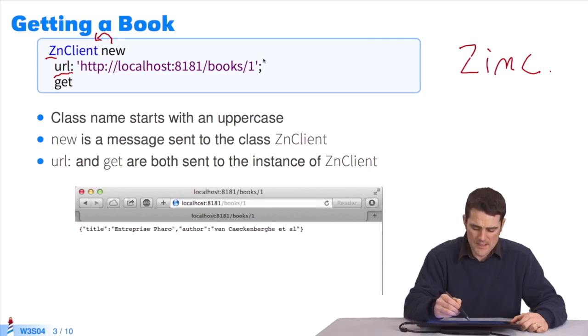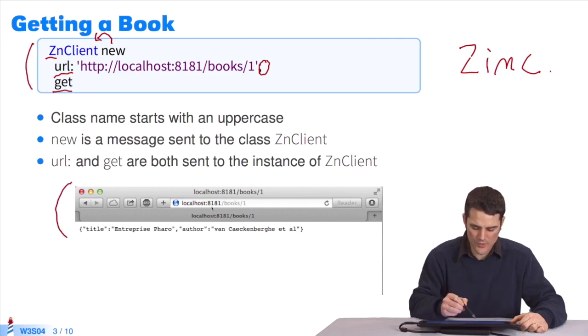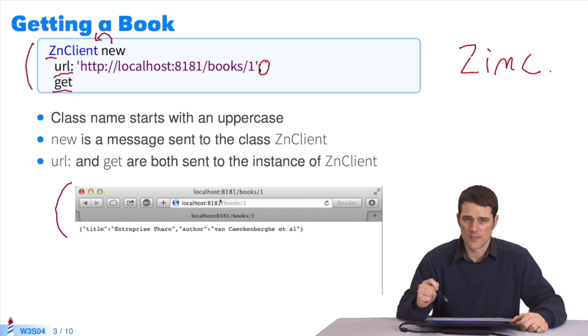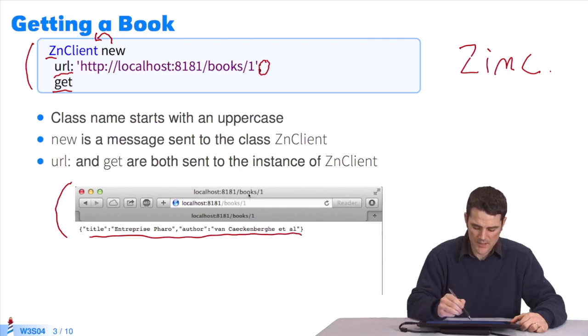Then we'll use the cascade. Let me remind you that semicolon at the end means you send a new message, get, to the same receiver. This bit of code simulates what your navigator will do when you type in the URL and press enter. It contacts the server of this web application and it returns an HTTP response. In this case, the information on a book, the book number one.